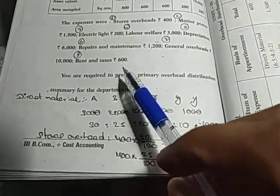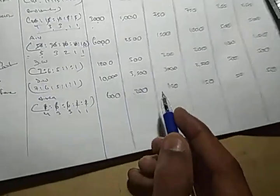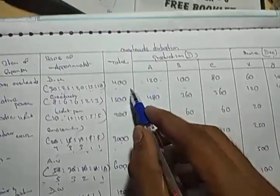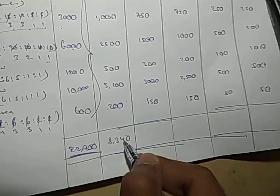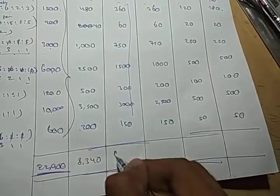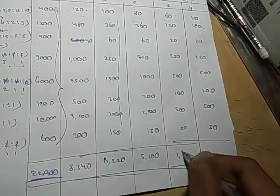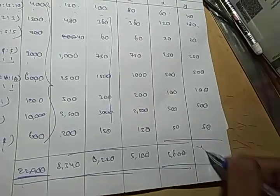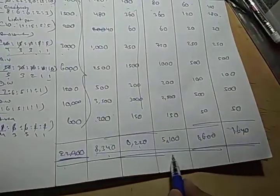You are required to prepare a primary overhead distribution summary. Final totals: A total is 8340, B total is 6220, C total is 5100, X total is 1600, Y total is 1640. Total is 22900.